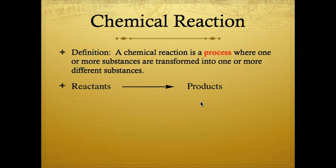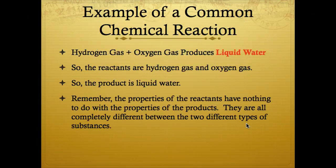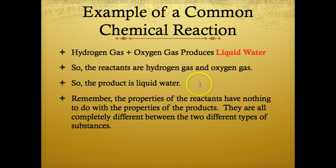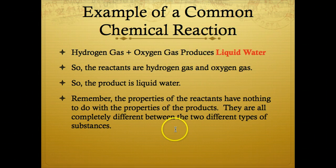A chemical reaction is not the substances that are involved, however. An example of a common chemical reaction: we can take hydrogen gas plus oxygen gas and produce liquid water. Now remember, the properties of the reactants have nothing to do with the properties of the products — they are completely different between the two different types of substances.